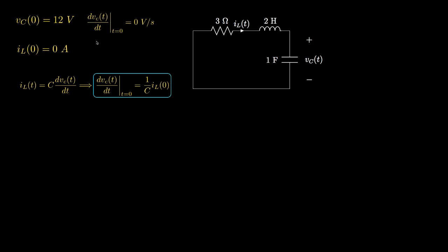Because the inductor current is zero just before and after the switch is moved, and because that is the current through the capacitor, we can conclude that the derivative of the capacitor voltage at t equals zero is also equal to zero, with units of volts per second.